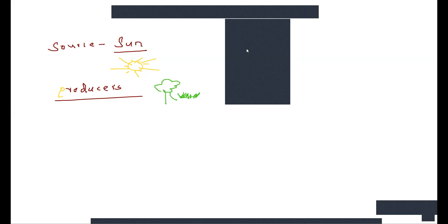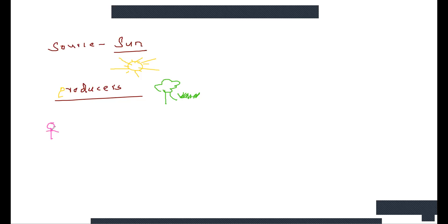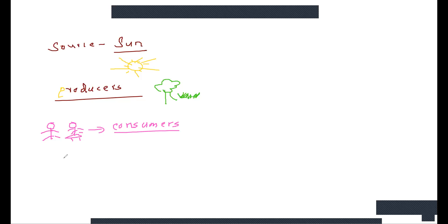How about us? Because we are consuming producers — we are eating plants, or animals are consuming the producers — so we are called consumers. Clear: the sun is the main source of energy, producers are plants, and then we have consumers. Plants are also called autotrophs because they make their own food.